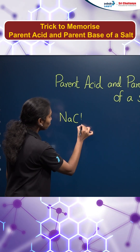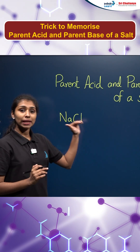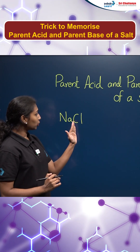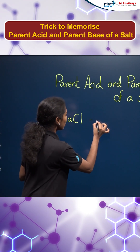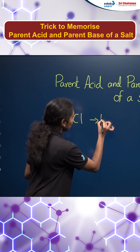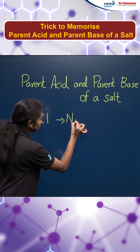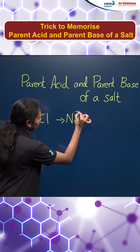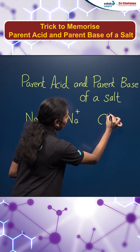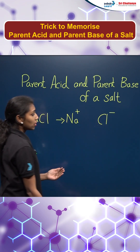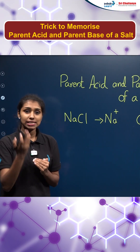The first step: we need to split this salt into its anions and cations. So it will be Na+ as the cation and Cl- as the anion.